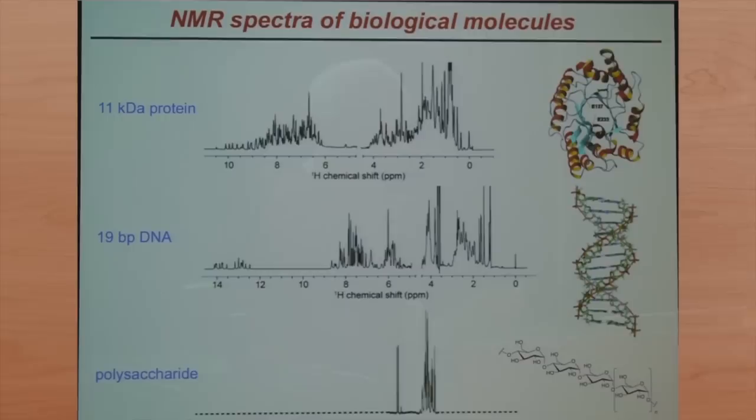Biologists use it in a slightly different way. These are NMR spectra of biological molecules. This is a protein, this is DNA, and this is a polysaccharide. They all have protons, and we can study them. They all have very different spectra and complicated spectra, which I'll come back to in a second.